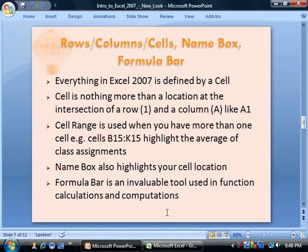Moving on, we have a few important things specific to Microsoft Excel: rows, columns, cells, the name box, and the formula bar. Everything in Excel 2007 is defined by a cell — a cell is a location at the intersection of a row and a column, for example A1. A cell range is used when you have more than one cell, such as B15 through K15, which highlights the average of class assignments. The name box highlights your cell location, and the formula bar is an invaluable tool used for functions, calculations, and computations.